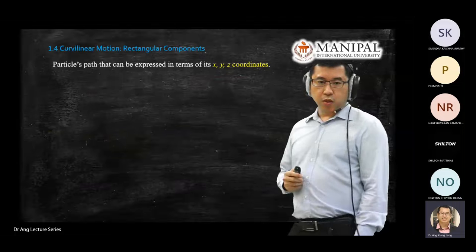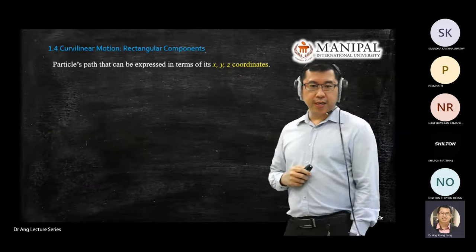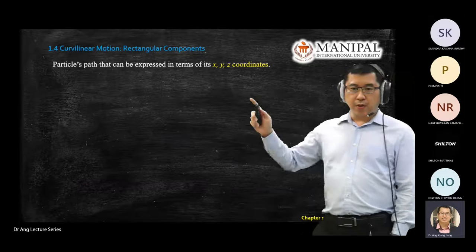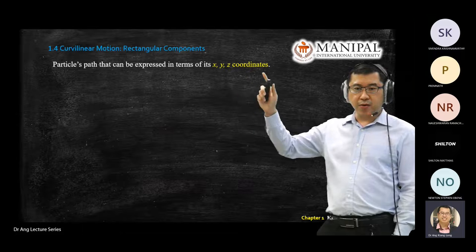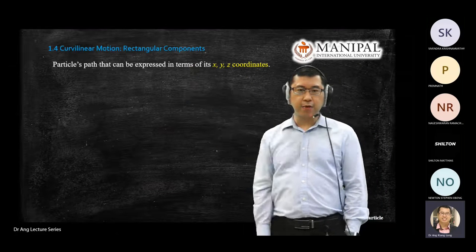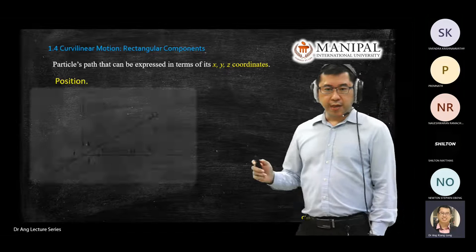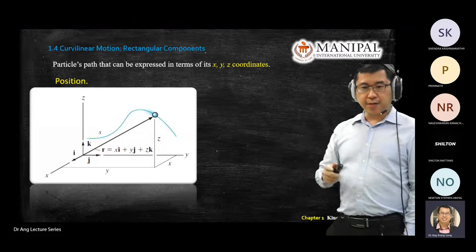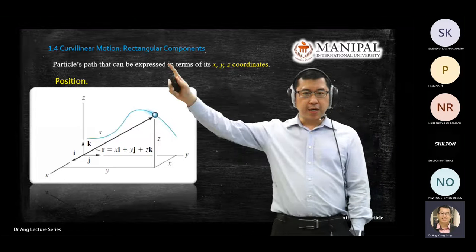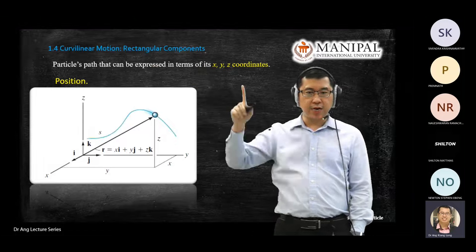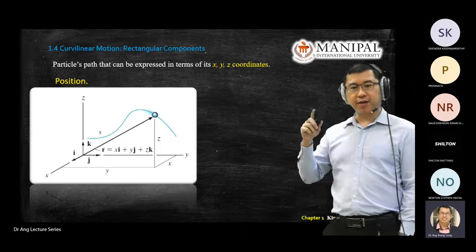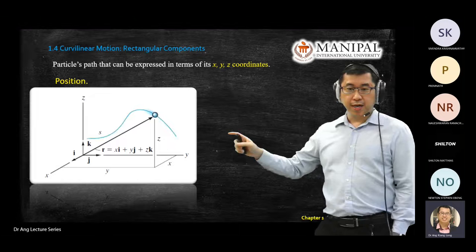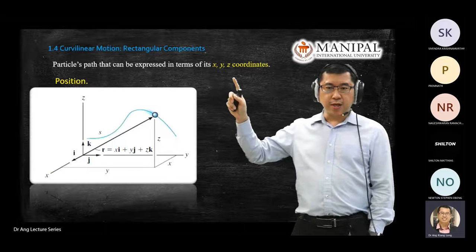Today we will combine what we learned so far — curvilinear motion on x, y, z coordinates, or what we call rectangular components. We've covered the definition of curvilinear motion in our previous class. Today we put the motion into a rectangular grid, or rectangular component — a three-dimensional Cartesian plane that gives you x, y, and z coordinates.